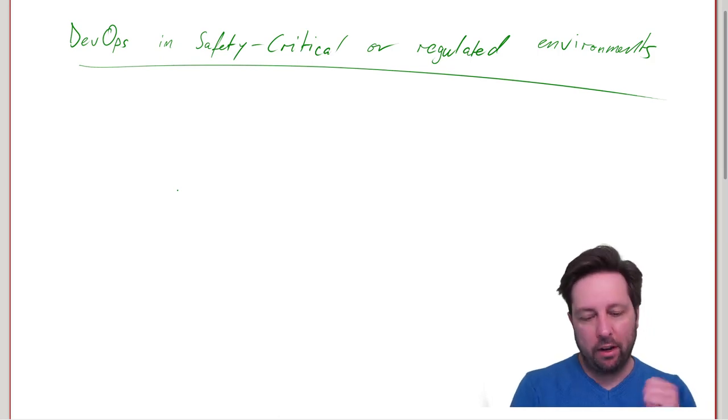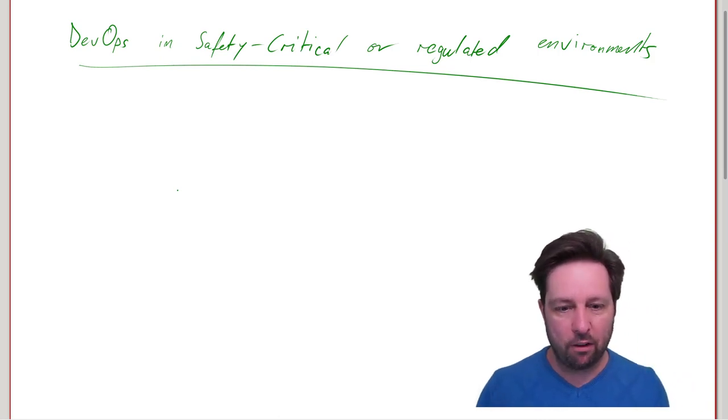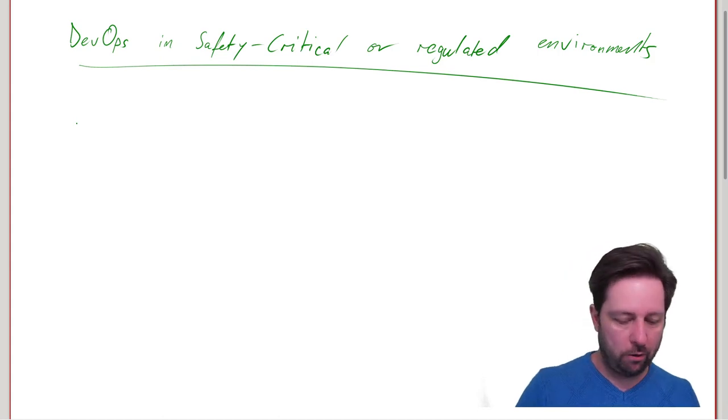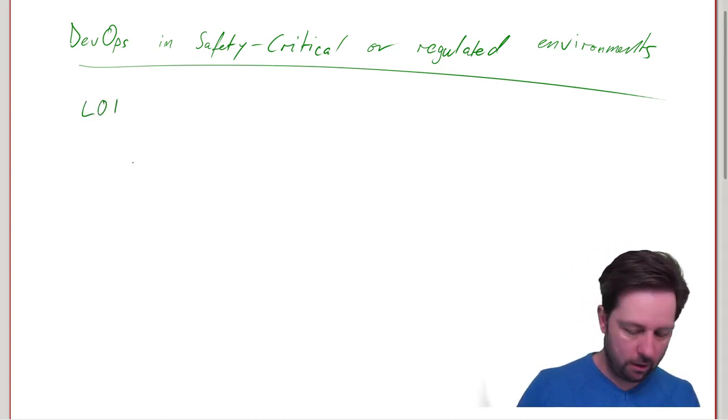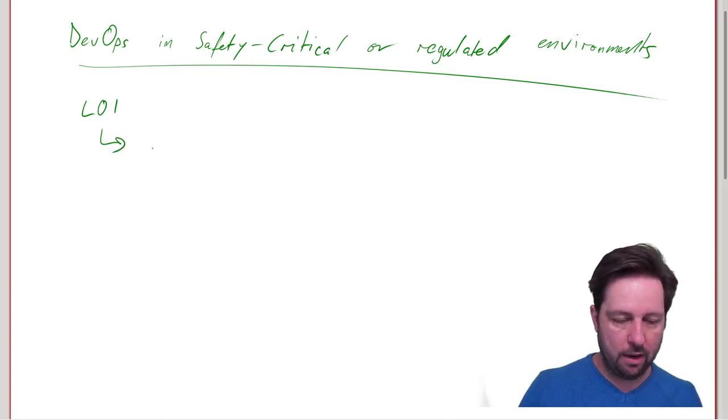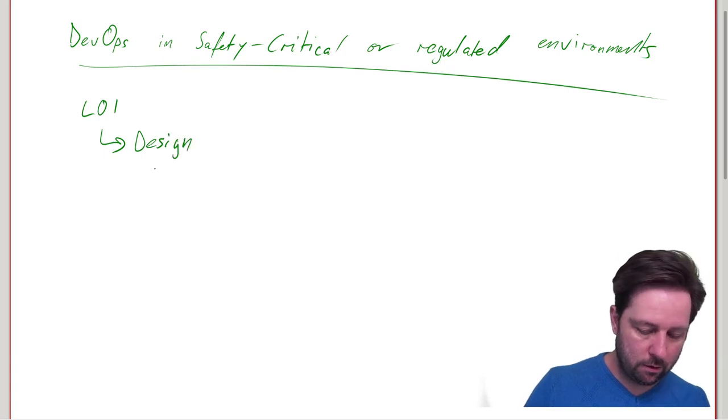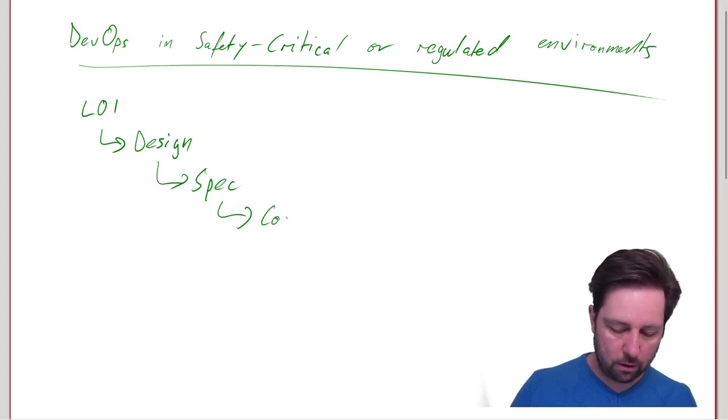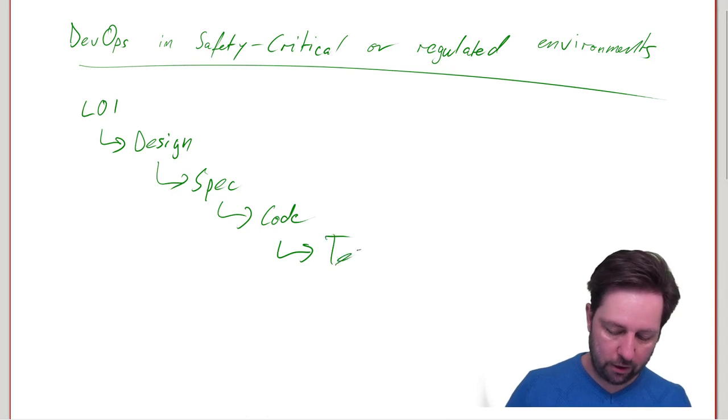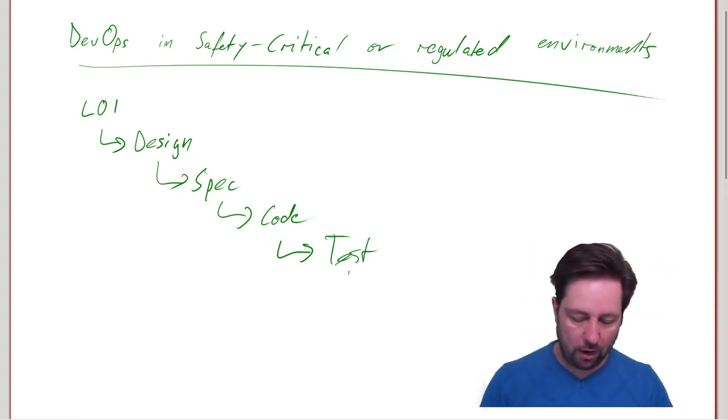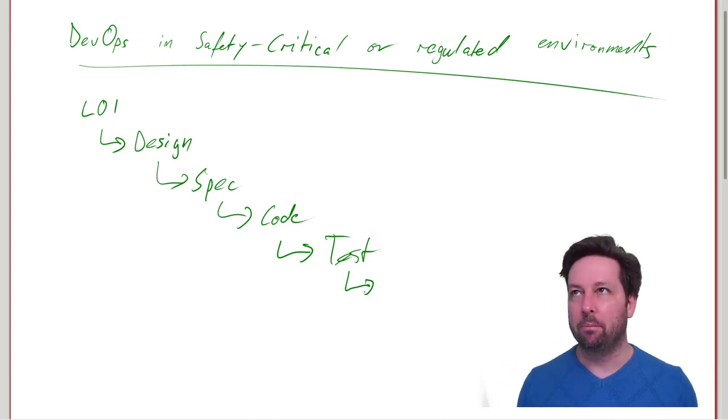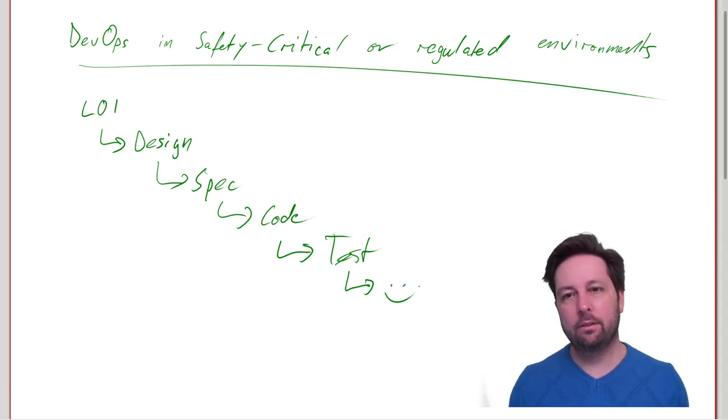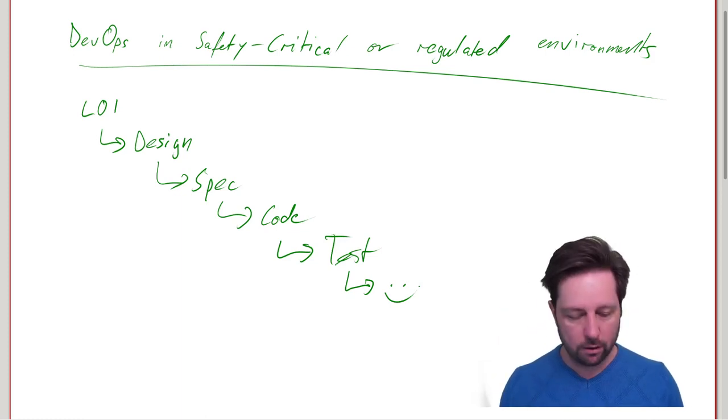If you know anything about safety critical regulations, you will probably have noticed that they are written in a way that kind of assumes a waterfall model. So you have to start with a letter of intent, and then you have to go and provide a design, and then you have to provide a specification, and then you have to actually code it, and then you have to test it. That's kind of how it works, right? And then of course you invite the assessors and they will have a look at it and hopefully they will be happy.